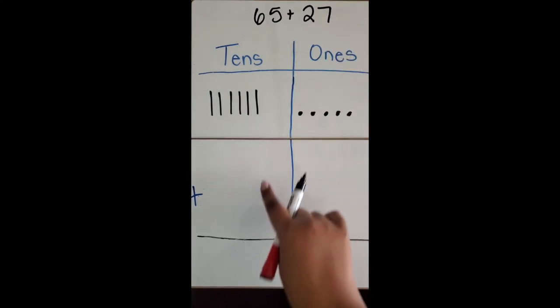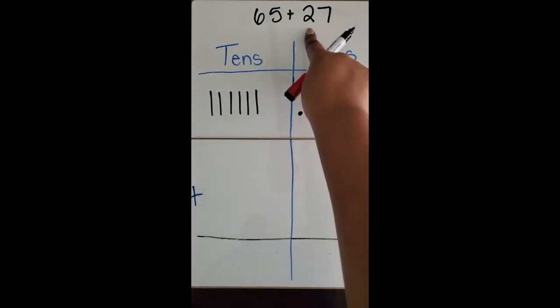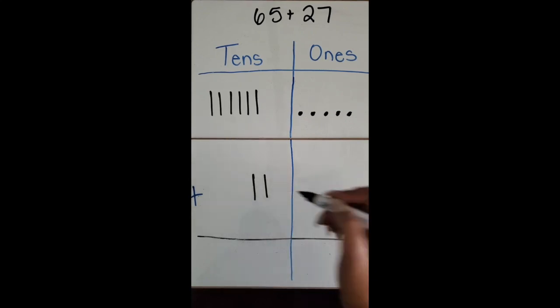Then I'm going to draw the second number, which is 27. It has two tens and seven ones. So one, two for two tens, and then seven ones.